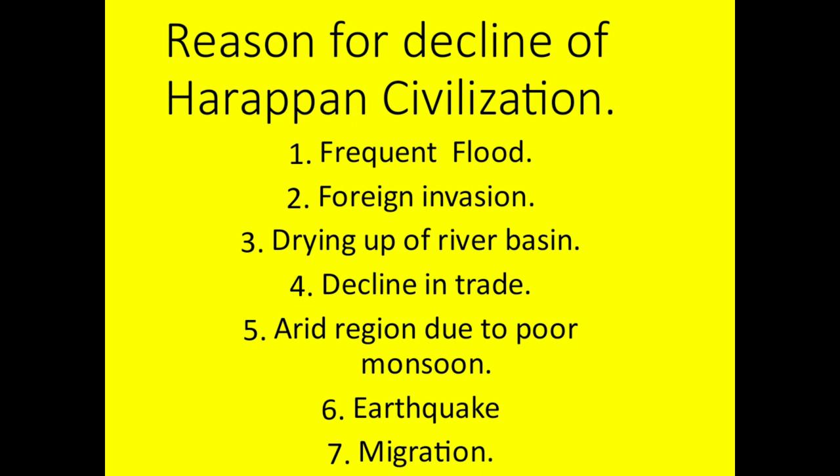Unit 3.7 — What could have been the reasons for the decline of the Harappan Civilization? The possible reasons include: frequent floods, foreign invasions, drying up of the river basin, decline in trading activities, arid conditions due to reduced monsoon, and earthquakes and migration.